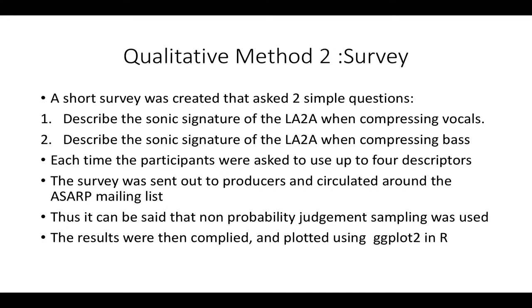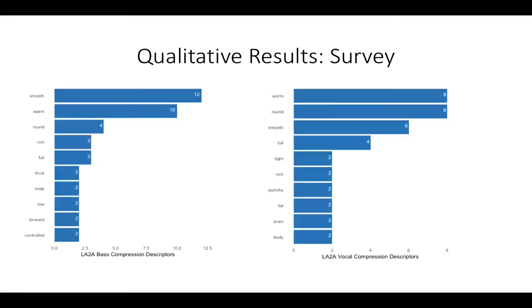The survey was sent to producers that I knew, producers that I've done research with before. Certainly they'd run an art production email list. So you could say it's what we call non-probability judgmental sampling - I kind of hand-picked the people I was going to approach because they were experts, they'd used LA-2As. Obviously it wasn't random, that's the point I'm trying to make.